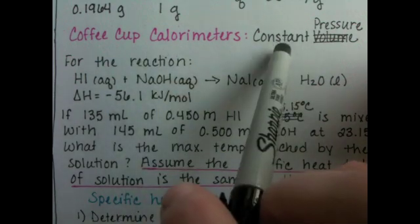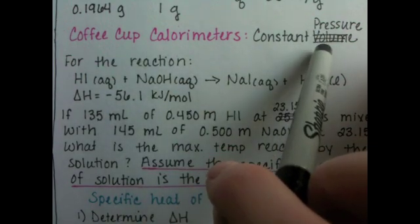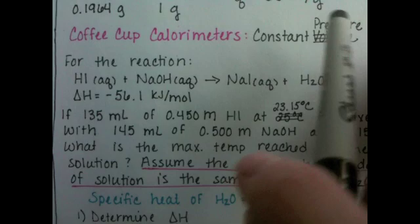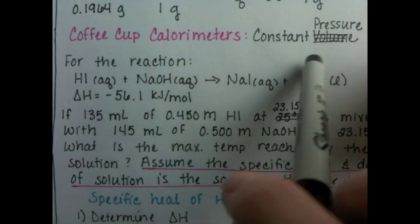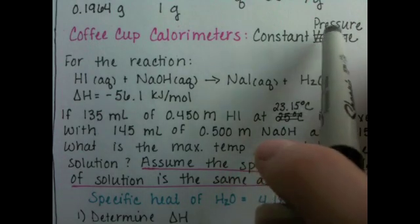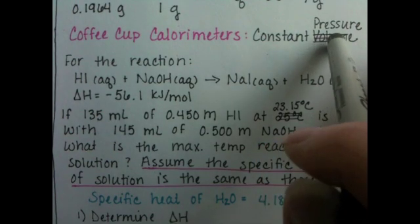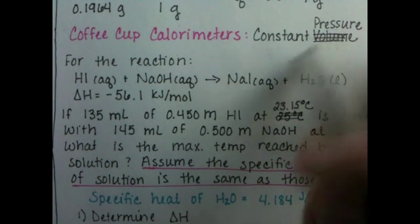First of all, the coffee cup calorimeter is a constant pressure calorimeter, not a constant volume calorimeter. I mean, it is constant volume too because volumes of liquids aren't really changing, but it's open to the atmosphere, so it doesn't have the ability to build up pressure.